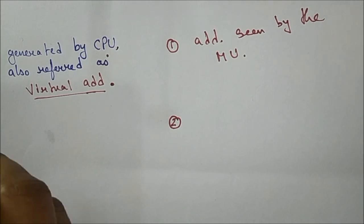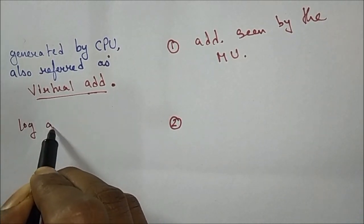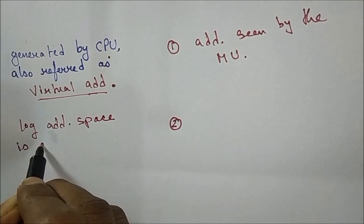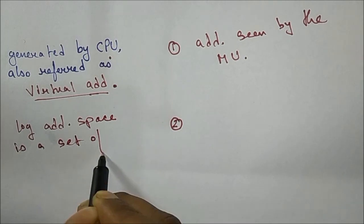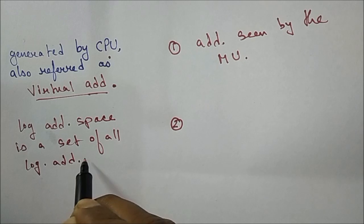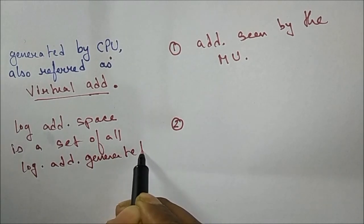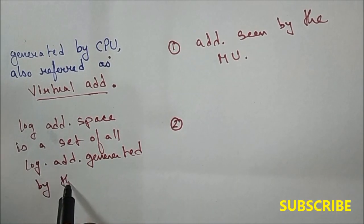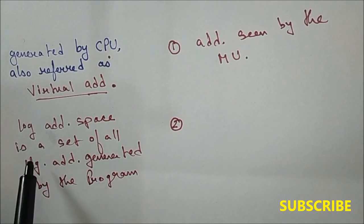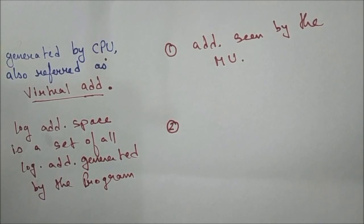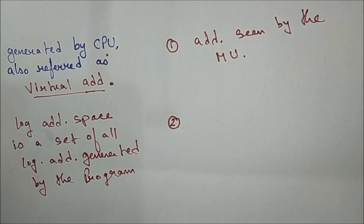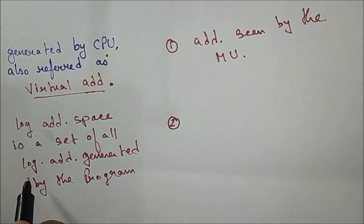The second difference is logical address space. Logical address space is a set of all logical addresses generated by the program. So if someone asks you what logical address space is, your answer should be: it is the set of all logical addresses generated by the program.